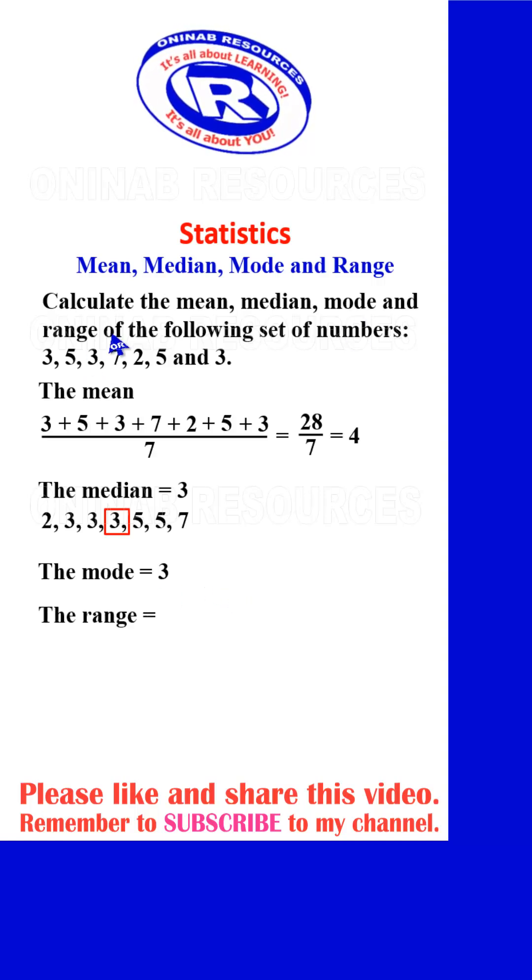We then go for the range. For the range, range is calculated by finding the positive difference between the highest number and the lowest number. The highest number here is 7, then minus 2, which is the lowest number. 7 minus 2 gives 5. And that's all for the solution of the range.